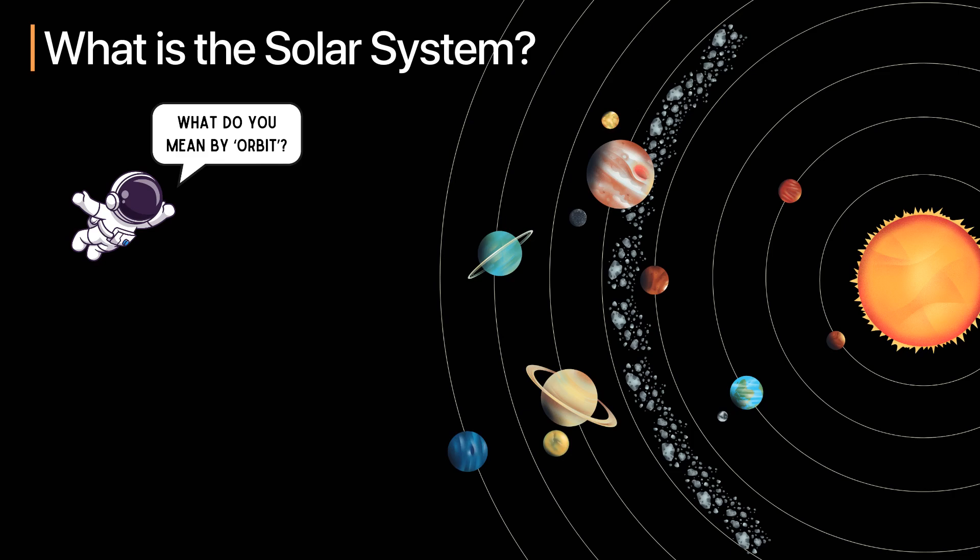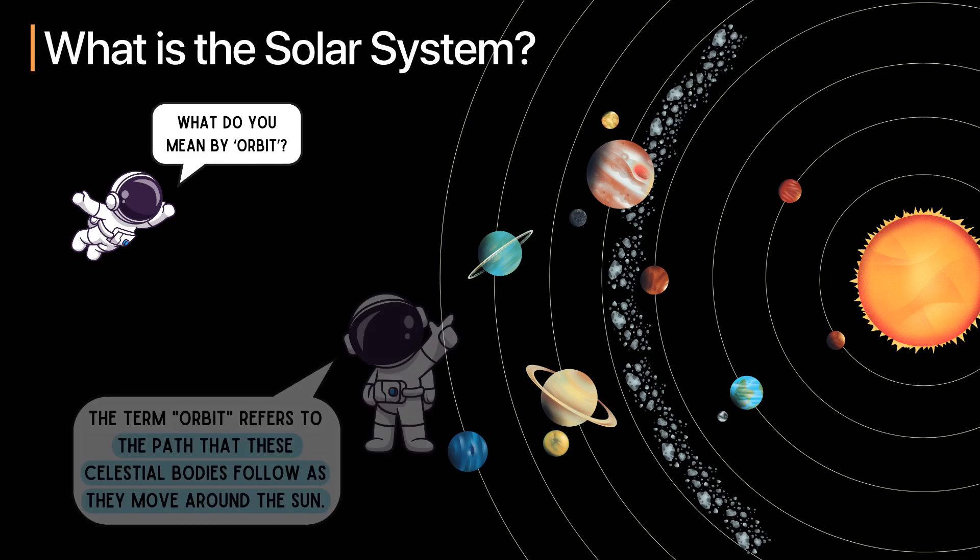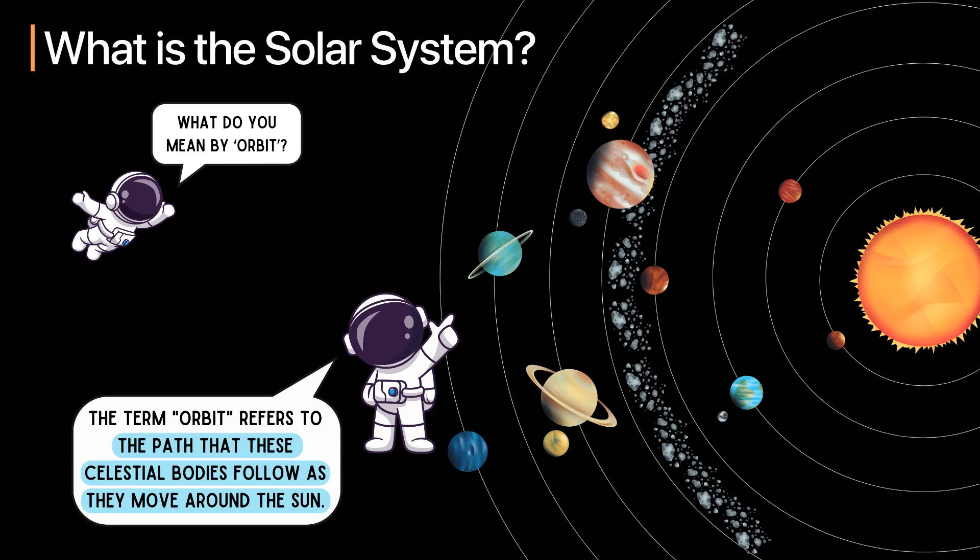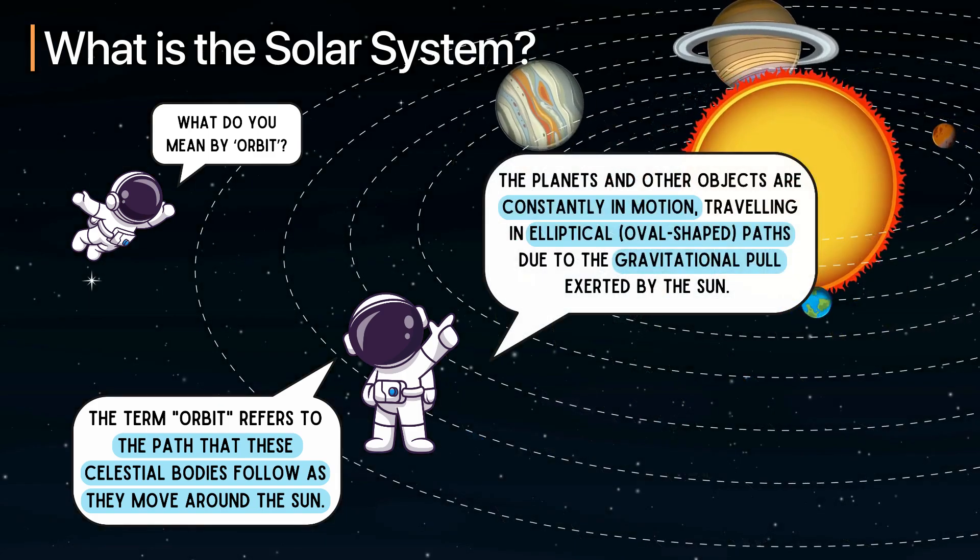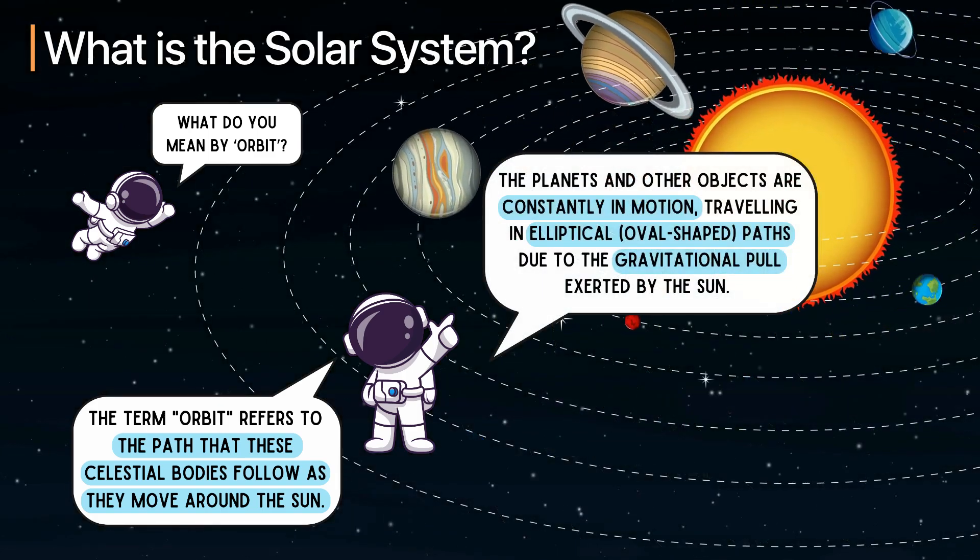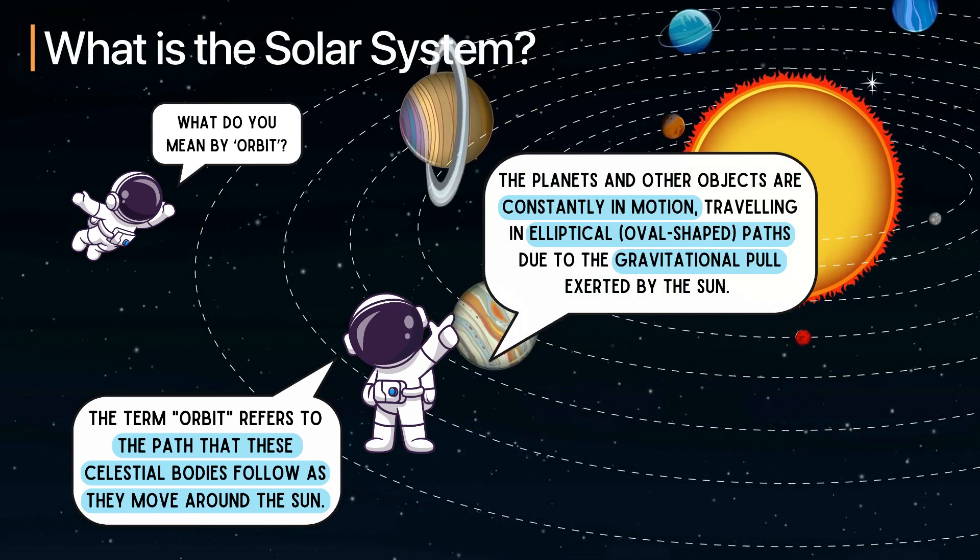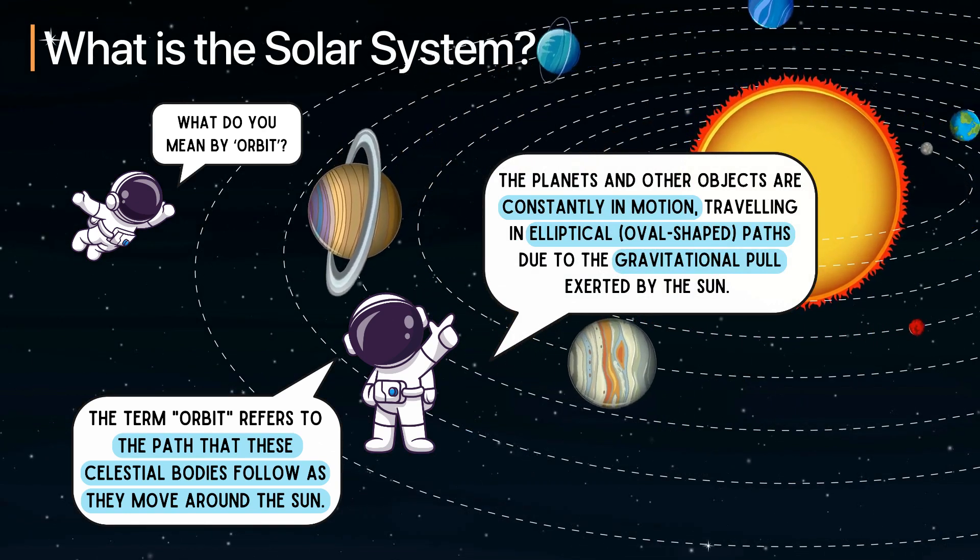What does it mean for planets and other objects to orbit the Sun? The term orbit refers to the path that these celestial bodies follow as they move around the Sun. The planets and other objects are constantly in motion, travelling in elliptical, oval-shaped paths due to the gravitational pull exerted by the Sun.